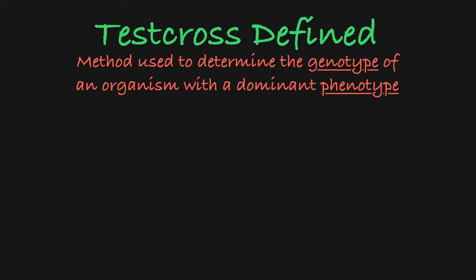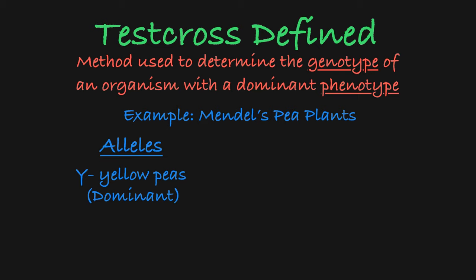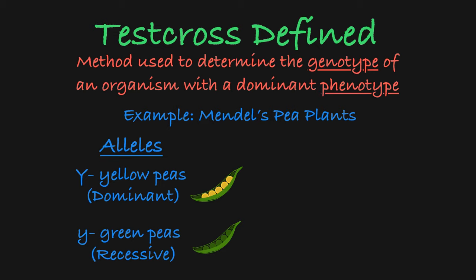Let's use a classic Mendelian example in pea plants. The gene that confers pea color has two alleles. The dominant allele yields a yellow pea phenotype, while the recessive allele is associated with a green pea phenotype.